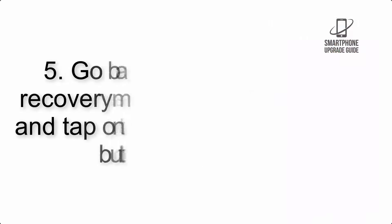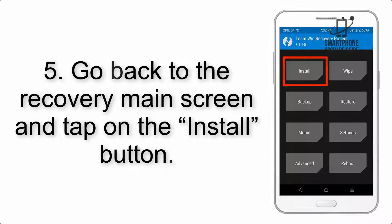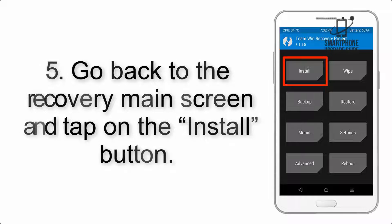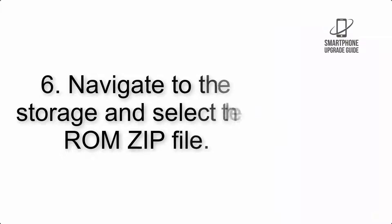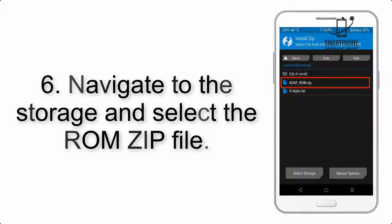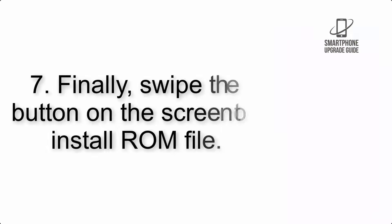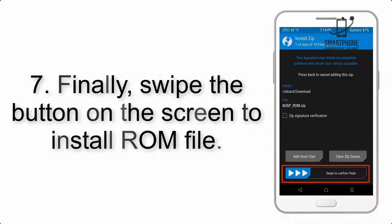Step 4: Swipe the button to wipe the device. Step 5: Go back to the recovery main screen and tap on the Install button. Step 6: Navigate to the storage and select the ROM zip file.